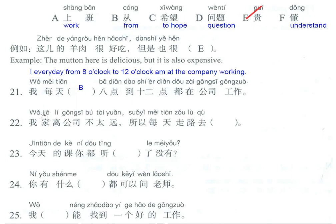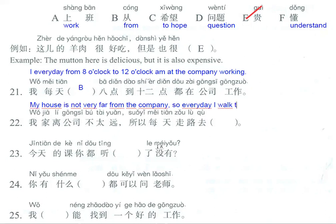Number 22: 我家离公司不太远 — my house is not very far from the company. 所以每天走路去 — so every day I walk to work. This answer is letter A.